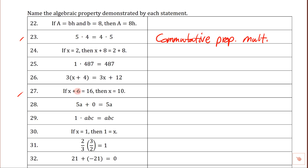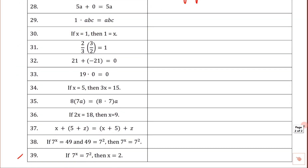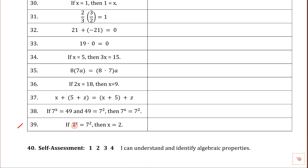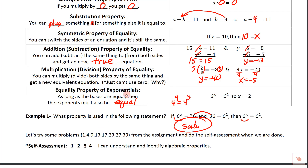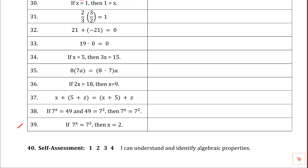Number 27: x plus six equals 16, then x equals 10. What changed? You'd subtract six from both sides. This is the subtraction property of equality. Number 29: if seven to the x equals seven squared, then x equals two. Remember, if the bases are equal, the exponents must be equal. This is the equality property of exponentials. As long as you get the idea across and these memorized for the test, you're in good shape.